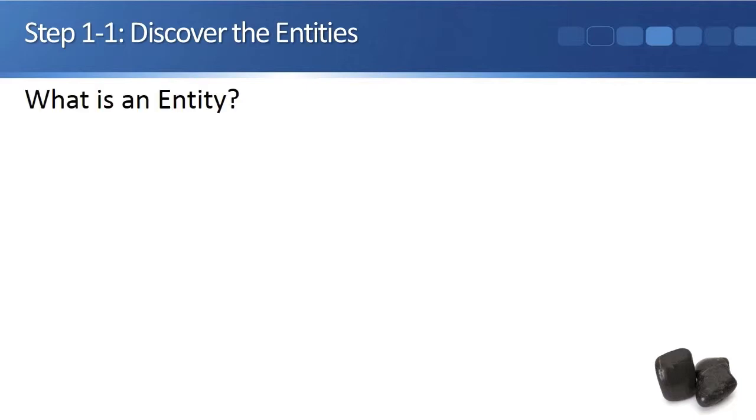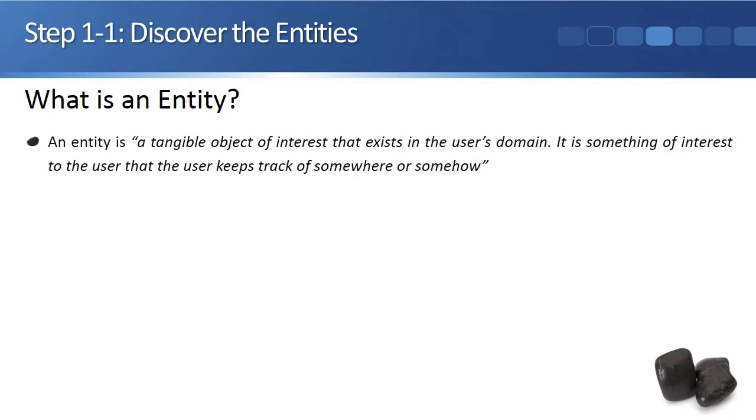What is an entity? An entity is a tangible object of interest that exists in the user's domain. It is something of interest to the user that the user keeps track of somewhere or somehow. Nouns or collective nouns in the problem domain denote objects of interest.